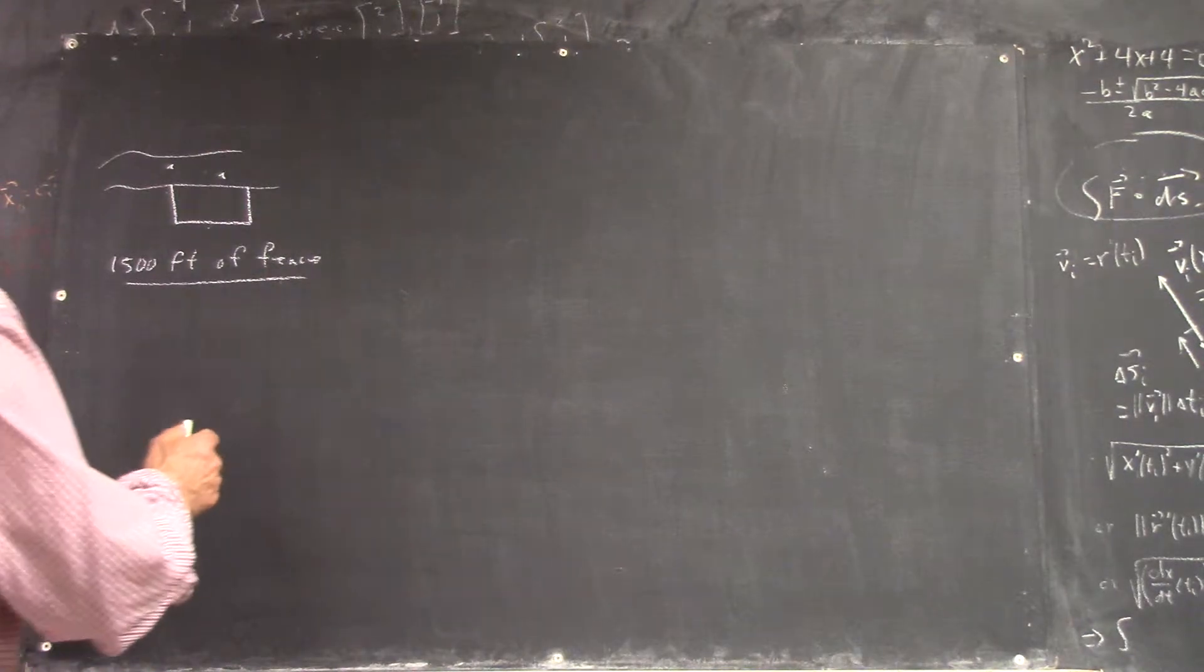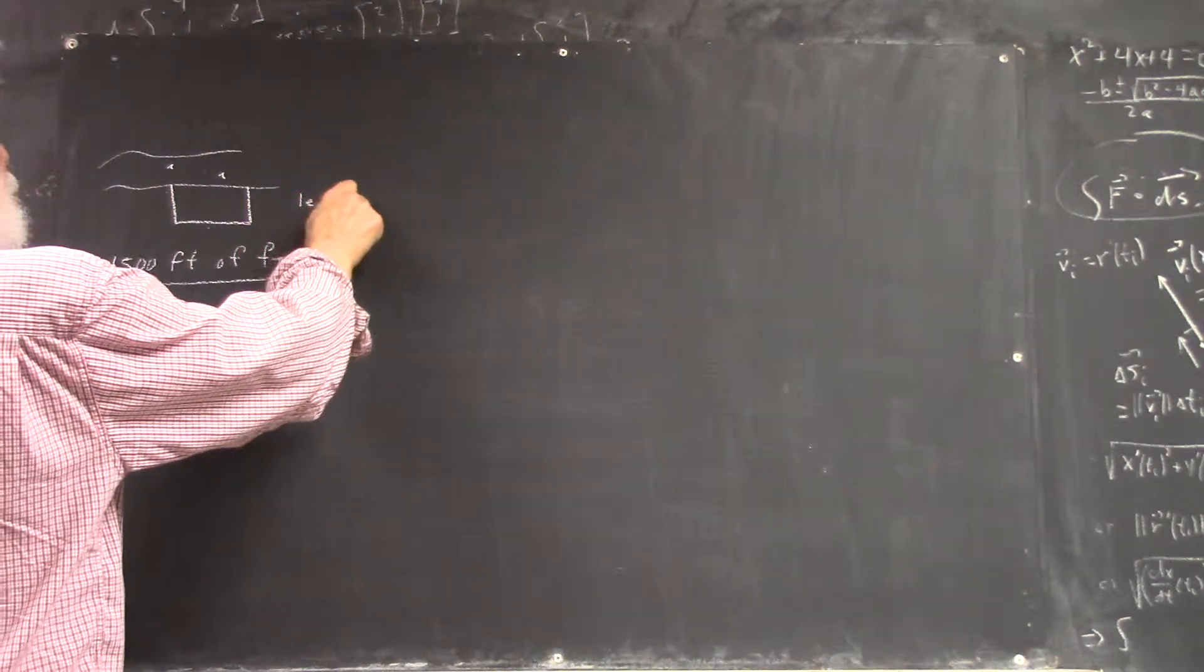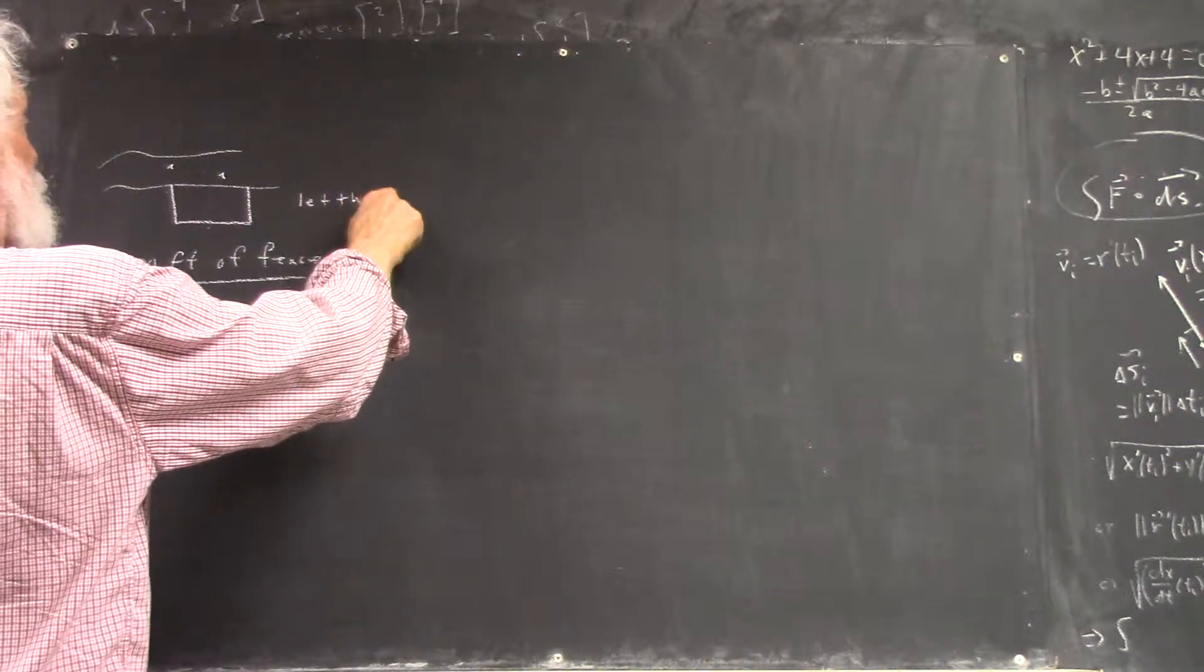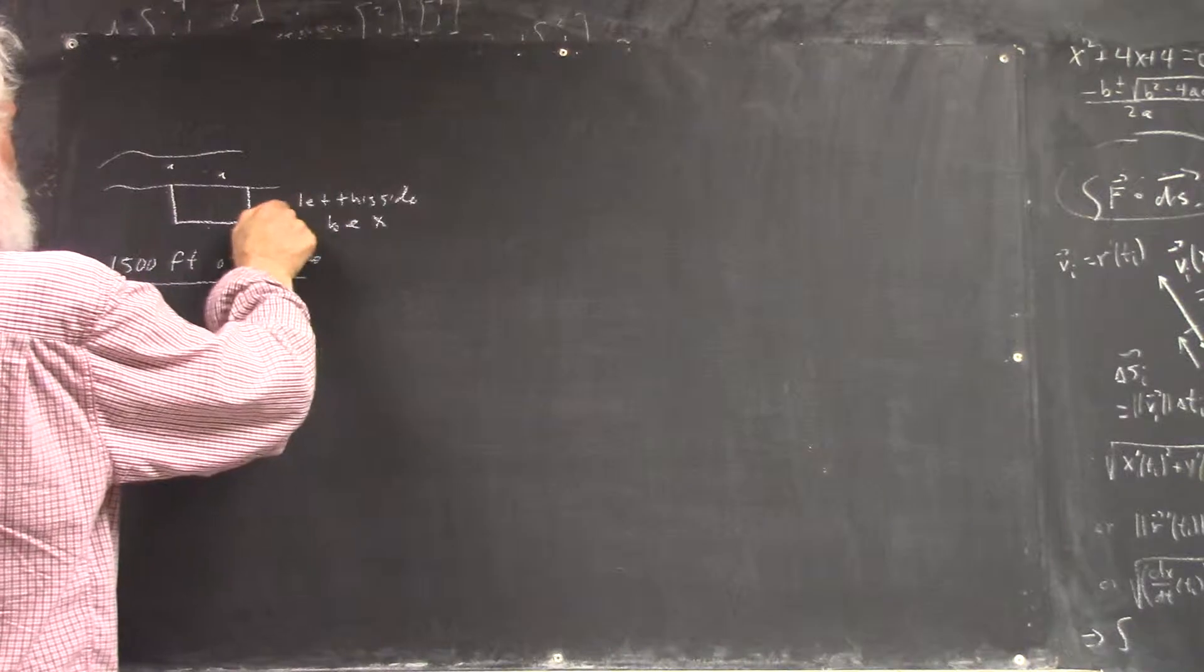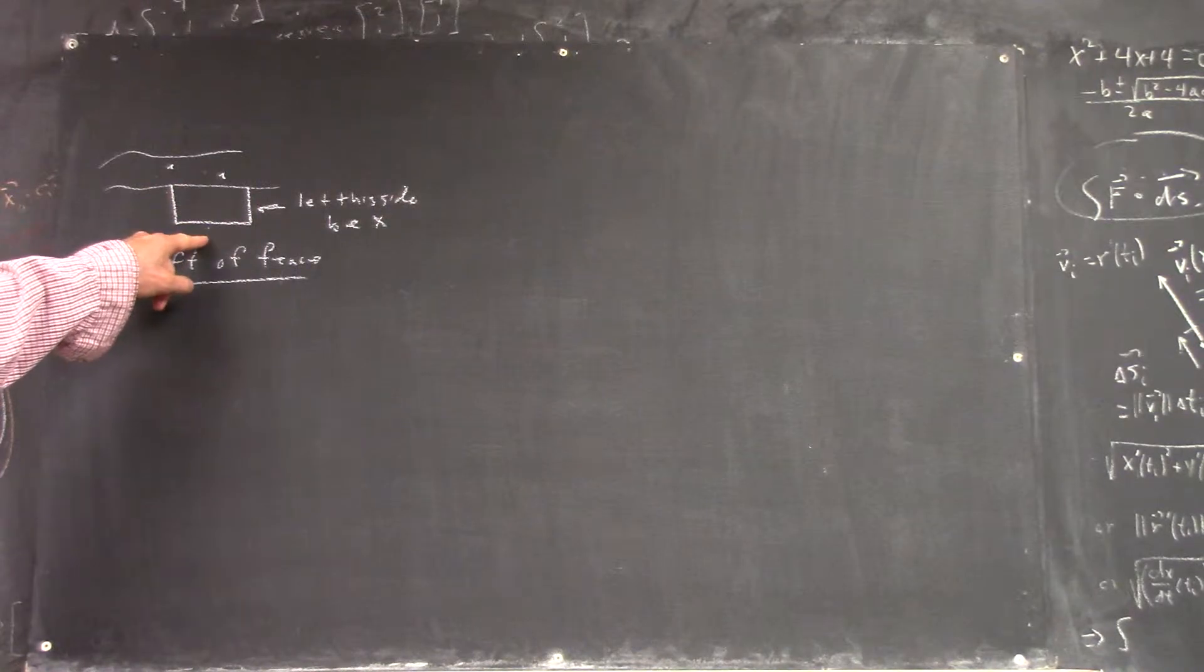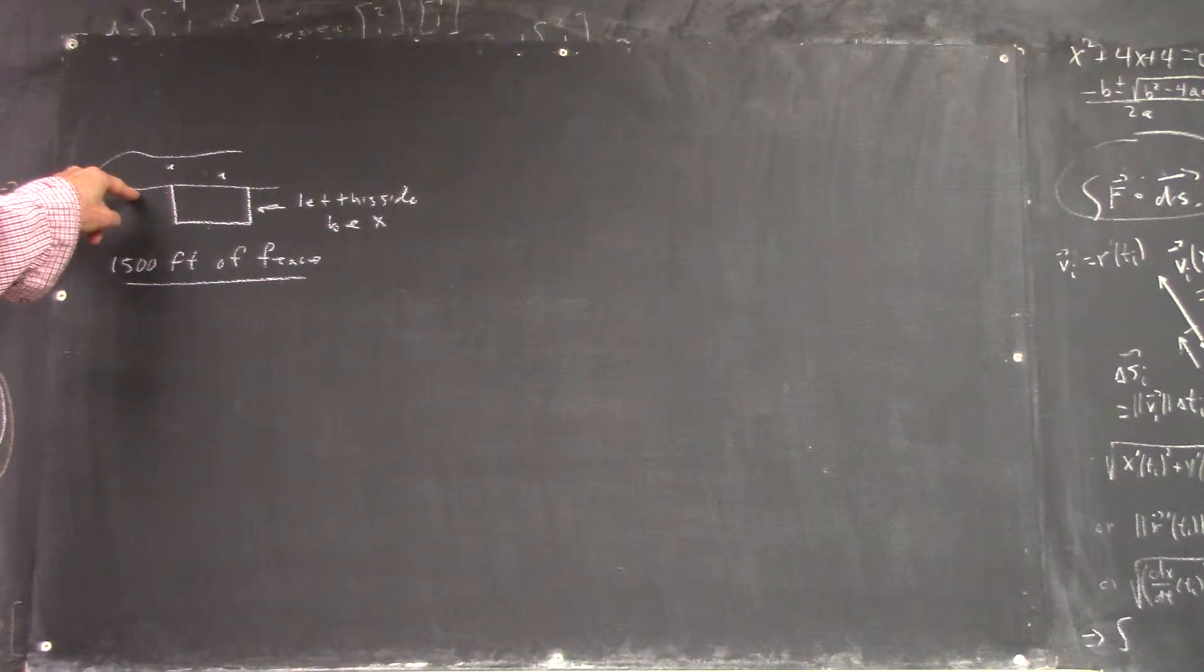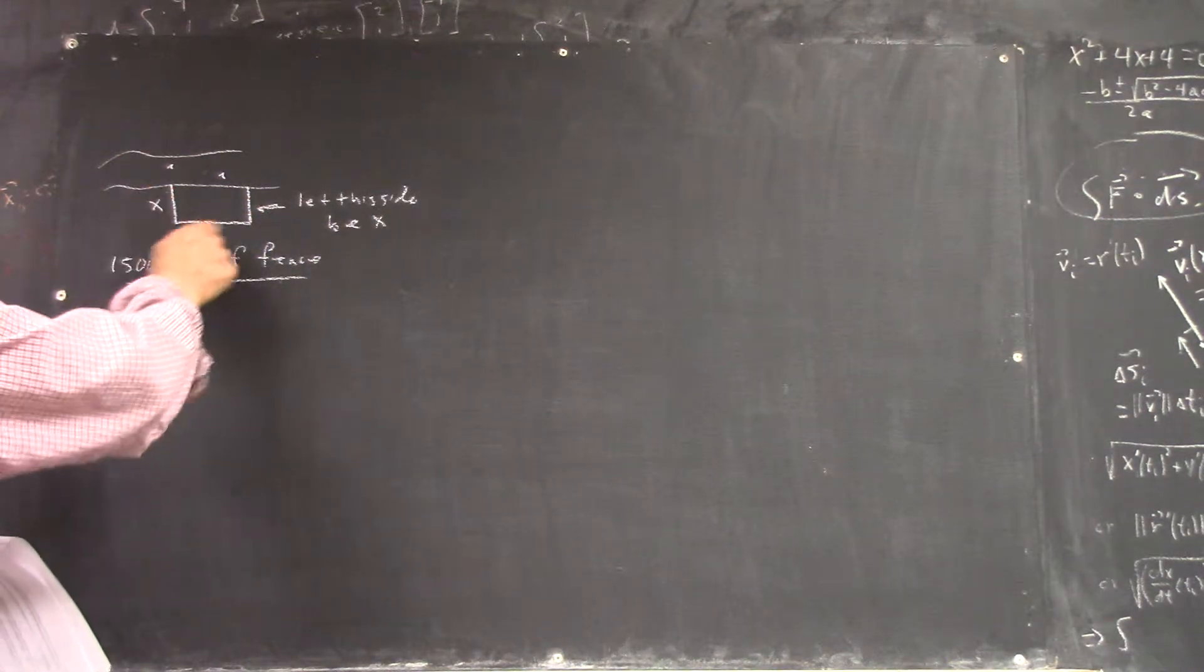What you're going to do is, you're going to say, okay, we're going to let this side be x. Okay? Now, if this side is x, then what's this side? Well, what's this side? Well, this side is also going to be x, right? Since this is rectangular. So, what's this side?